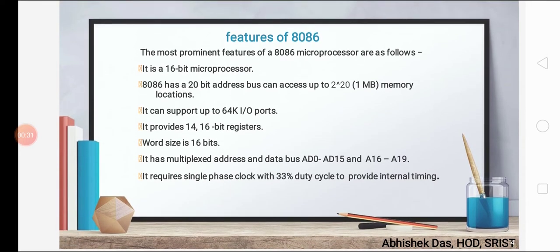The 8086 microprocessor has some features. The main features are: it is a 16-bit microprocessor, its clock frequency is 5 megahertz, it requires a 5 volt power supply, it has a 16-bit data bus and a 20-bit address bus. The 20-bit address bus means it can access up to 1 MB memory location. It is a 40-pin IC, it can support up to 64 kilobyte input-output port, and it has two operating modes — minimum and maximum.